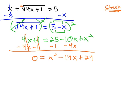Since the equation equals 0, we know the next step to solve it is to factor. A little bit of work with this one, and we can see it factors to x minus 12 times x minus 2.